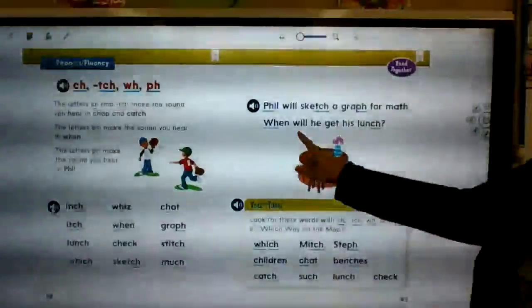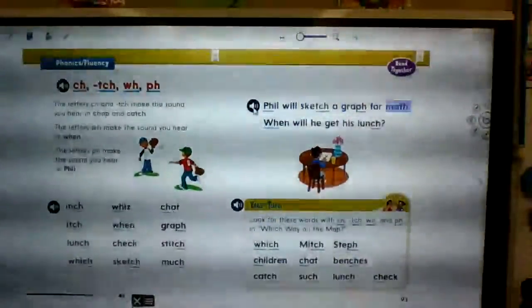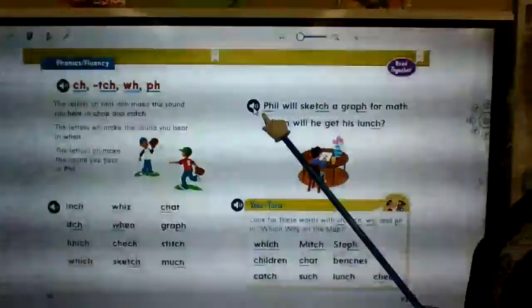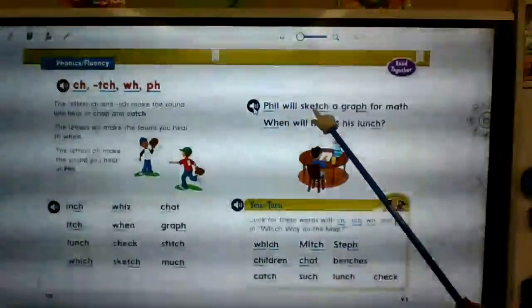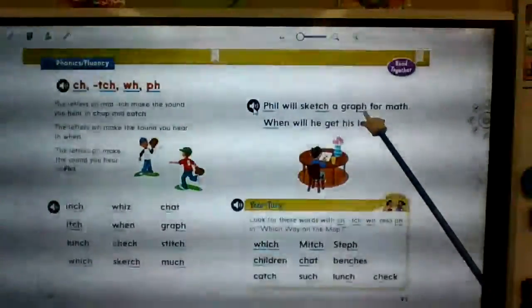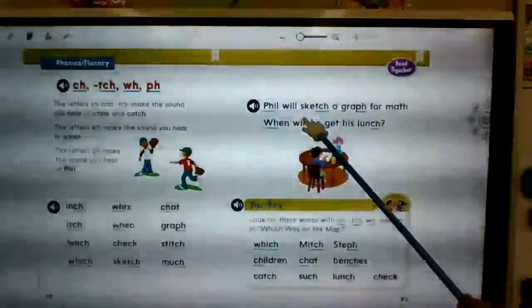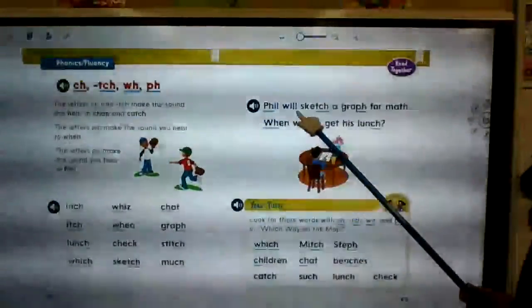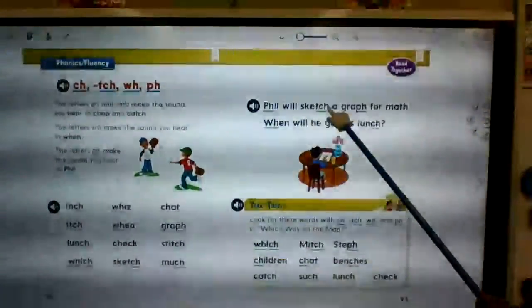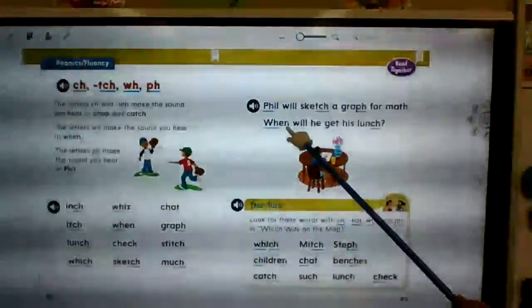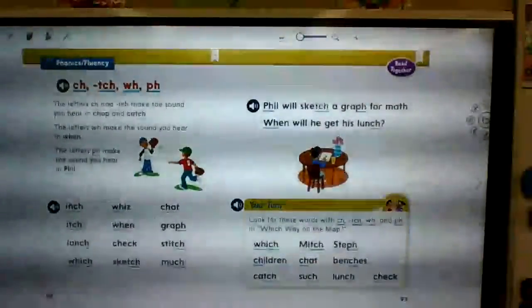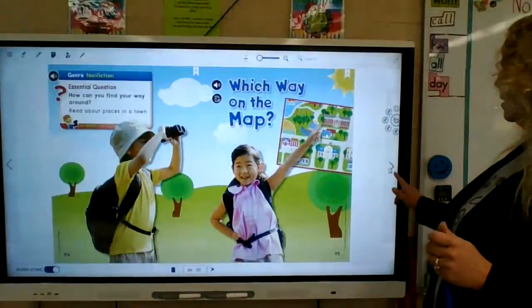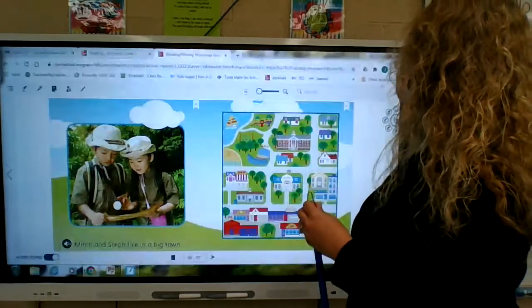And then we're going to practice these sentences. Phil will sketch a graph for math. When will he get his lunch? So ph we have to think of that as f. Phil will sketch a graph for math. When will he get his lunch? One more time. Phil will sketch a graph for math. When will he get his lunch? Now make sure that you did reread your story. If you didn't, that's something you need to do today. Read your story.